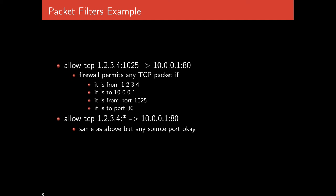We typically want to apply the same decision regardless of which client-side port is used — what matters is whether they're trying to talk to our HTTP server. Similarly, replacing the source IP address with an asterisk implements a rule like 'allow HTTP traffic to this machine from anyone on the internet' or 'disallow HTTP traffic from anyone on the internet to this particular machine.'